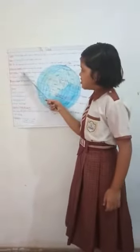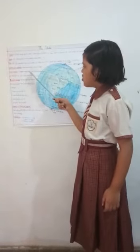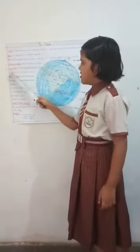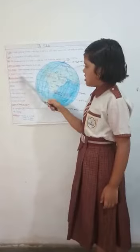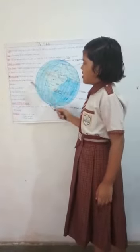The 0 degree longitude runs through the old Royal Observatory at Greenwich, near London, and is called the Prime Meridian.